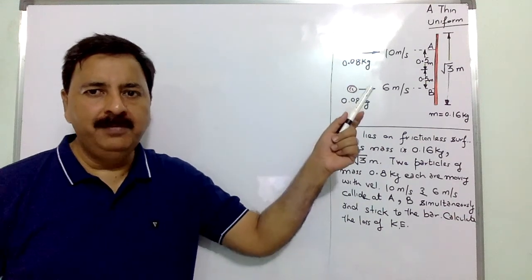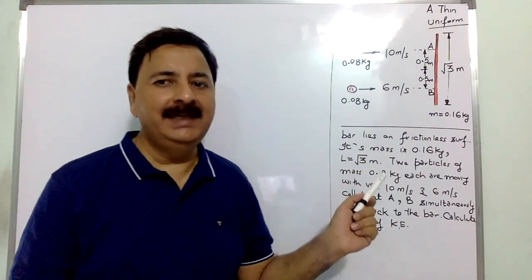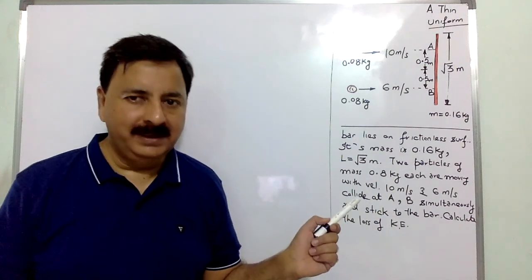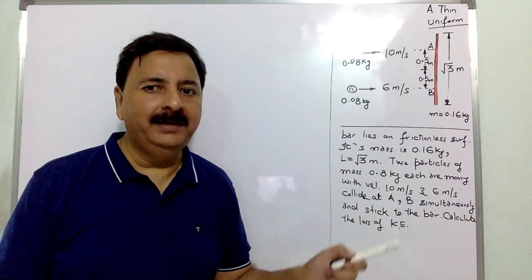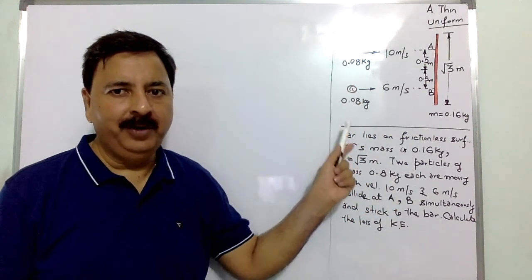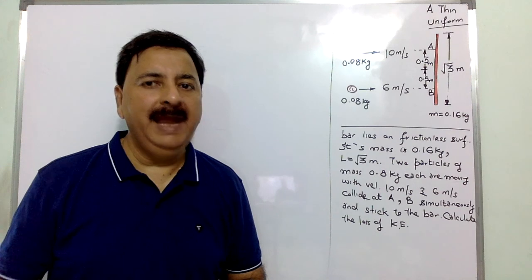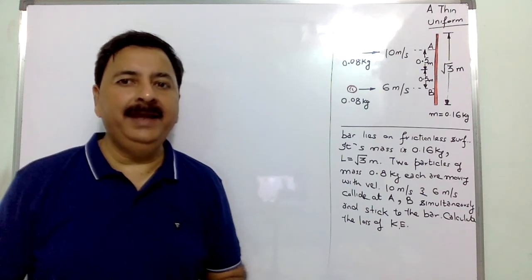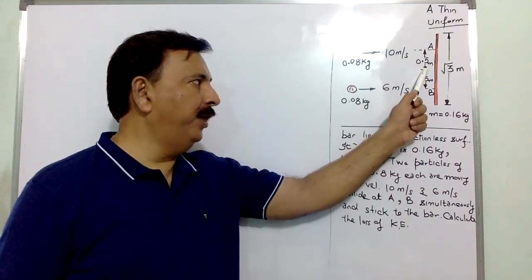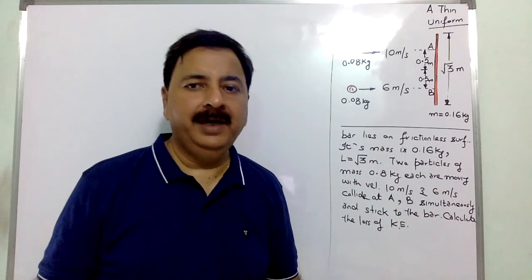The question is: a thin uniform bar lies on a frictionless surface. Its mass is 0.16 kg and length is √3 meters. Two particles of mass 0.08 kg each are moving with velocities 10 m/s and 6 m/s. They collide at points A and B, at a distance of 0.5 meters from the center of mass. You have to find the loss of kinetic energy.